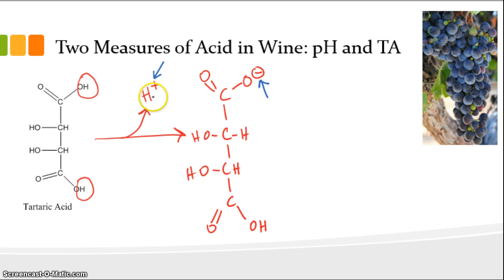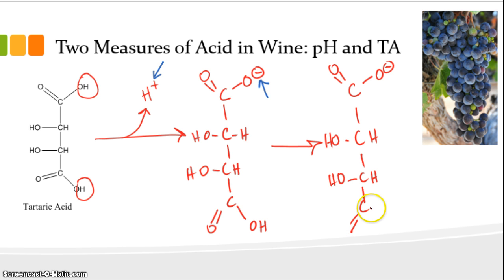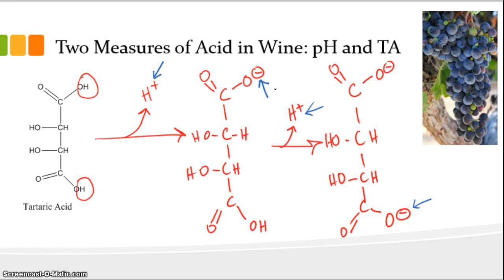The positively charged proton leaves, and that leaves a negative charge behind because we started out with a neutral charge. If tartaric acid happens to lose one more proton, we end up with that same structure at the top, but at the bottom we have another negatively charged oxygen because we've lost another proton. That second one comes off less easily, but it still comes off.